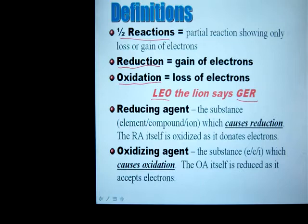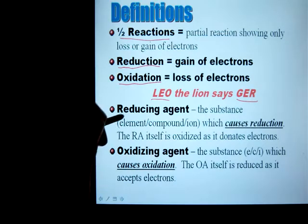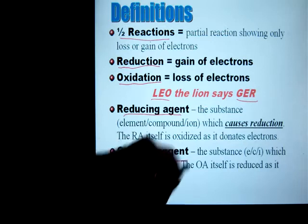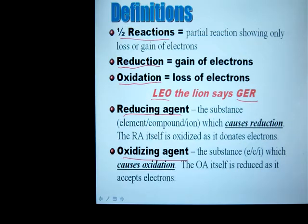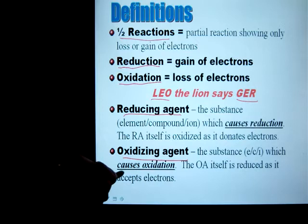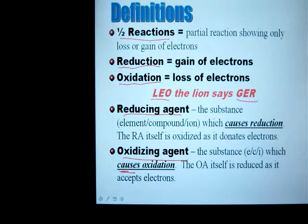Another couple of definitions that sometimes cause confusion are reducing agents versus oxidizing agents. When you are being reduced, that means you are gaining electrons. If you are gaining electrons, that means you are taking them from someone else, which means you are actually causing oxidation, which means you are an oxidizing agent. Oxidizing agents get reduced, reducing agents get oxidized.